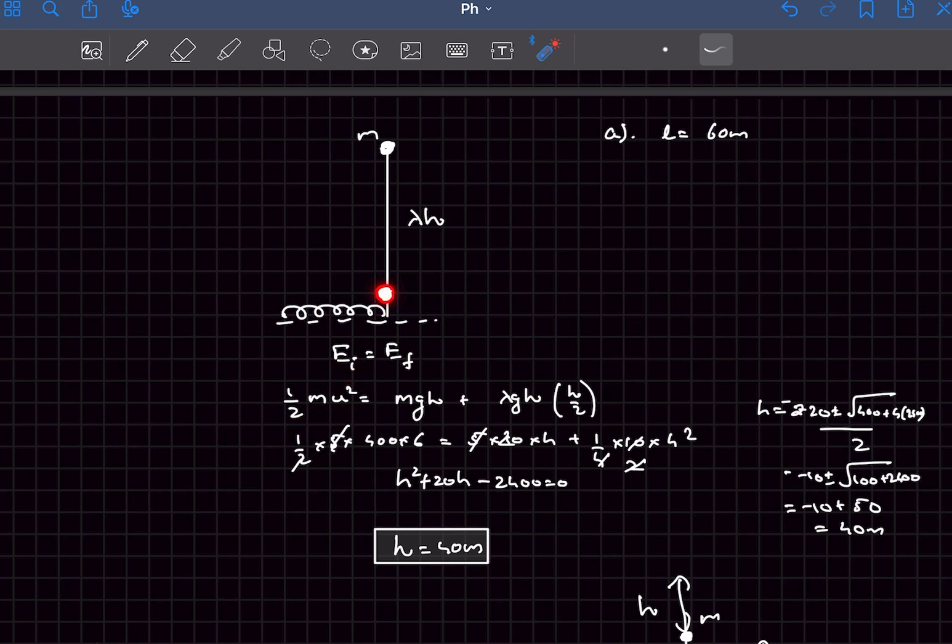Finally, the potential energy of this mass m becomes mgh, and the potential energy of the chain would be the mass which is lambda gh times the height of the center, that is h by 2. If you solve this, you'll get the answer for h to be 40 meters.